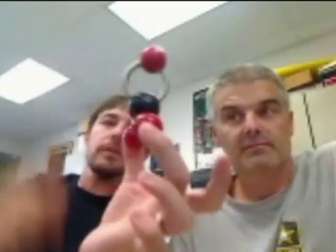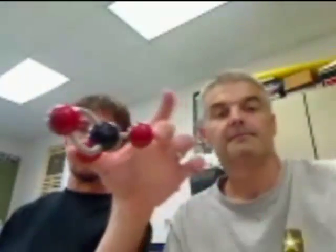So this is called the trigonal planar shape. Okay, so if you want to see an example of that here, we have a trigonal planar molecule. This is the sulfur and the oxygens coming off it with the single bonds, and then the springs here represent the double bond, trigonal planar.